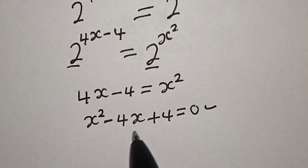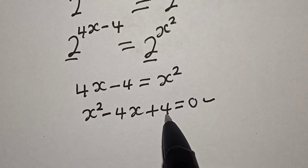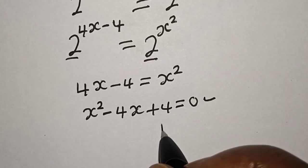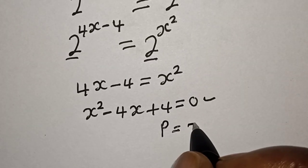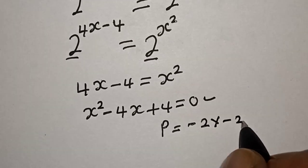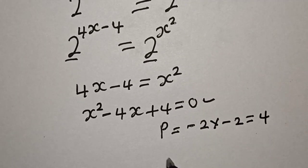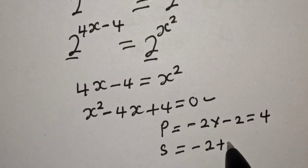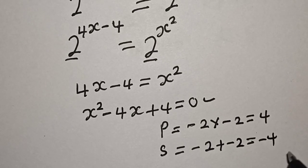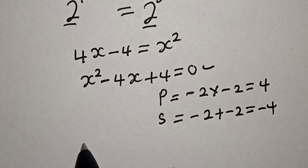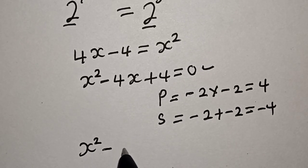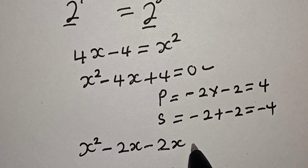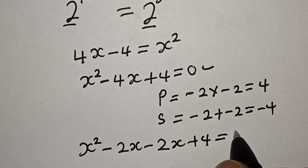Let's solve this using the factorization method. The product is 4 and the sum should be minus 4. So the product is minus 2 multiplied by minus 2, which equals 4. And the sum is minus 2 plus minus 2, which equals minus 4. So the equation becomes x squared minus 2x minus 2x plus 4 is equal to 0.